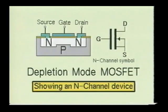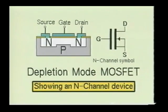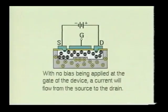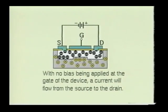Next, we shall look at the depletion mode insulated gate MOSFET. It is very similar to the enhancement mode MOSFET, with the primary difference being that this device has a lightly doped channel placed between the two heavily doped source and drain blocks. This channel is made of the same type of material as used to form the source and drain blocks. If the drain is made positive with respect to the source and no bias is applied to the gate, a current will flow through the channel.